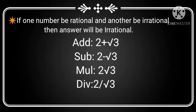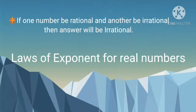Similarly, when we divide: 2 (rational) divided by root 3 (irrational). So, if one number is rational and another is irrational, then the answer will always be irrational.